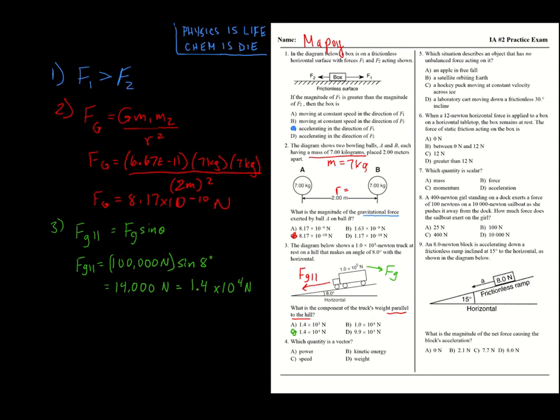Number four: which quantity is a vector? We can eliminate choices A and B since we haven't discussed those. Speed is a scalar — think S and S: speed, scalar. Its counterpart is velocity, which is a vector. Weight is the one we've talked about specifically this unit, and that's a vector — it points downward.